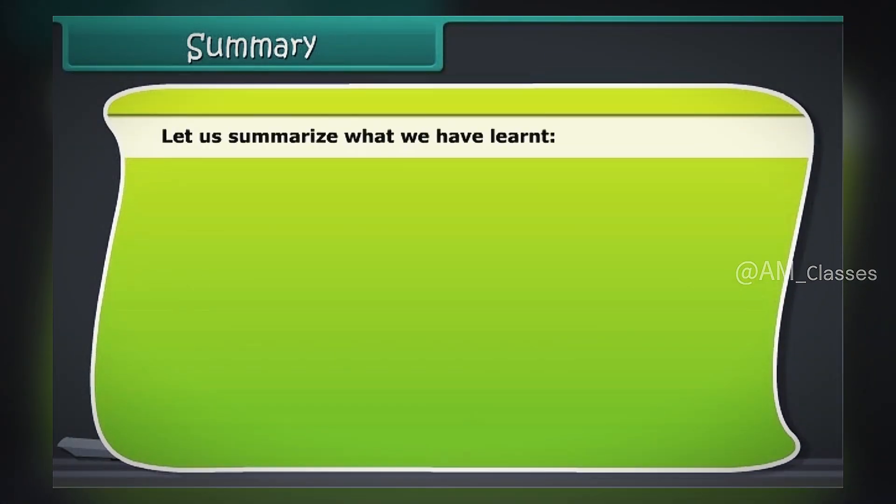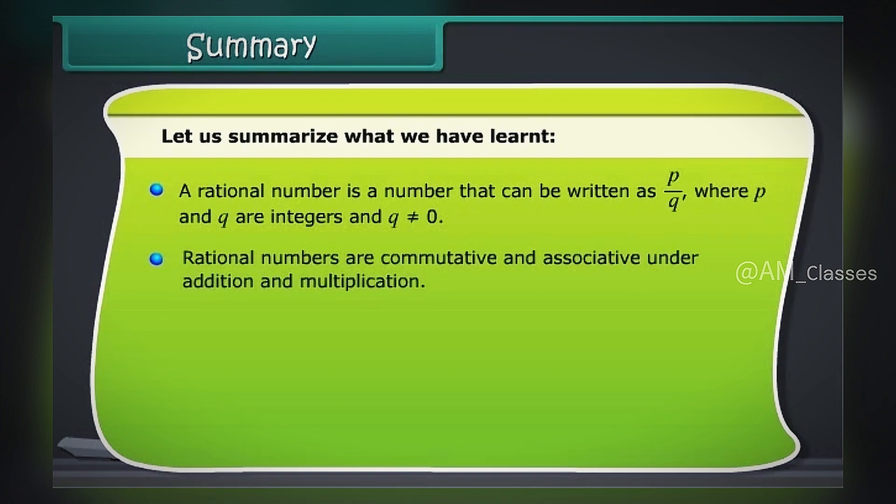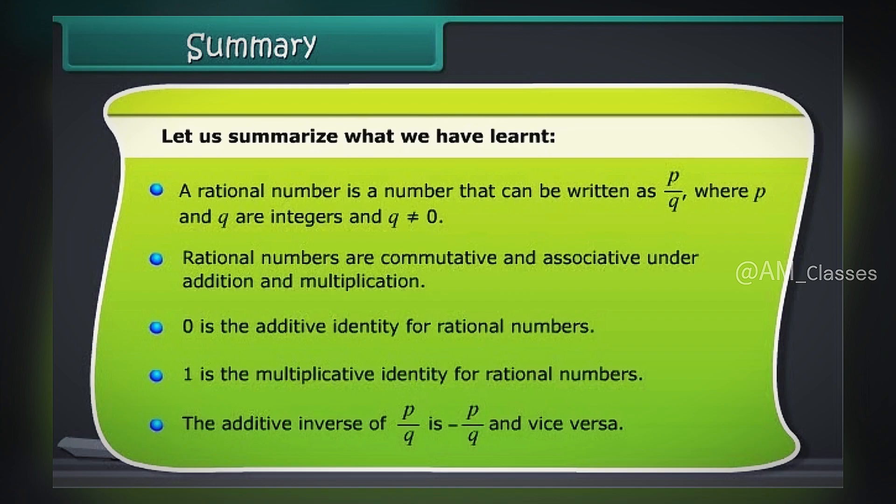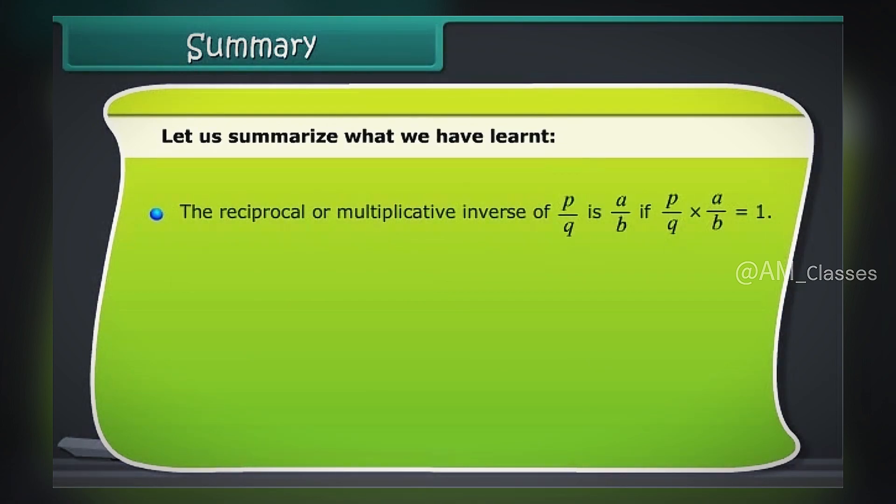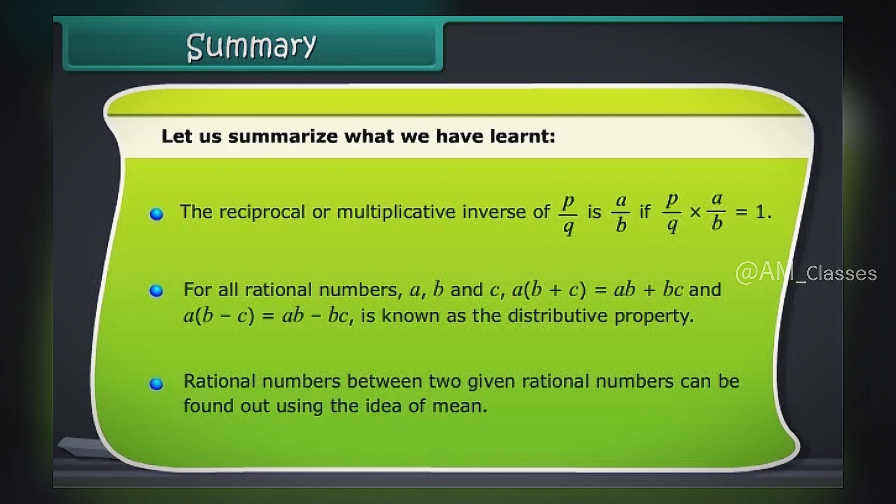Summary. Let us summarize what we have learned. A rational number is a number that can be written as P upon Q, where P and Q are integers and Q is not equal to 0. Rational numbers are commutative and associative under addition and multiplication. 0 is the additive identity for rational numbers. 1 is the multiplicative identity for rational numbers. The additive inverse of P upon Q is minus P upon Q and vice versa. The reciprocal or multiplicative inverse of P upon Q is A upon B if P upon Q into A upon B is equal to 1. For all rational numbers A, B and C, A into B plus C is equal to AB plus BC and A into B minus C is equal to AB minus BC, is known as the distributive property. Rational numbers between two given rational numbers can be found out using the idea of mean.